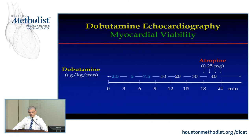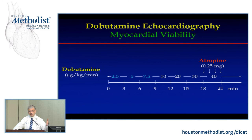Dobutamine has been very nicely investigated from this institution and many others in detecting viability. It's somewhat paradoxical — if you give an inotropic agent to someone with significant coronary disease and repetitive ischemia, why can you still see contractile reserve? You shouldn't have much reserve if you already have dysfunction, but indeed it happens the vast majority of the time. At times you see continued improvement despite higher doses of dobutamine, which tells us something about pathophysiologic correlates.